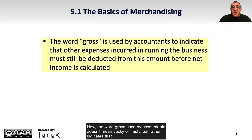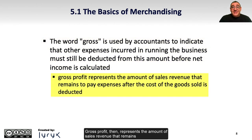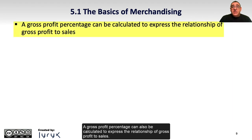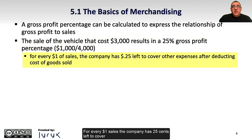The word gross used by accountants doesn't mean yucky or nasty, but rather indicates that other expenses incurred in running the business must still be deducted from this amount before net income is calculated. Gross profit represents the amount of sales revenue that remains to pay expenses after the cost of goods sold is deducted. A gross profit percentage can also be calculated to express the relationship of gross profit to sales. The sale of the vehicle that costs $3,000 results in a 25% gross profit percentage — $1,000 in gross profit divided by $4,000 in sales. For every $1 of sales, the company has $0.25 left to cover other operating expenses after deducting the cost of goods sold.